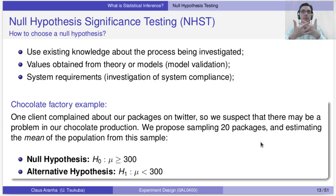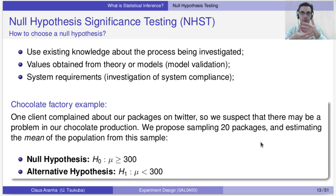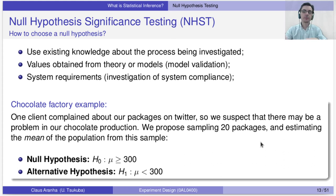So how do we choose the null hypothesis? The null hypothesis is chosen using existing knowledge — from theory, for instance if we have a model we want to validate, or from system requirements if we want to see if a system is compliant. For the factory example: a client complained on Twitter that they bought a package and only had 200 grams, so we suspect there may be a problem. We sample 20 packages and estimate the mean of the population. Our null hypothesis is: the package has the size that was advertised. The alternate hypothesis is: the package does not have the size that was advertised. This is the basics of null hypothesis significance testing for statistical inference. In the next video we'll explain how we decide between the null hypothesis and the alternate hypothesis — be warned, there will be a little bit of mathematics involved.